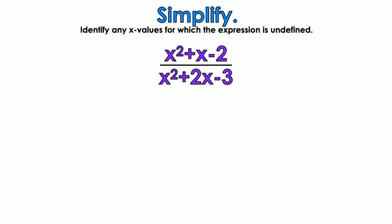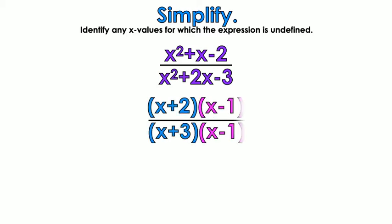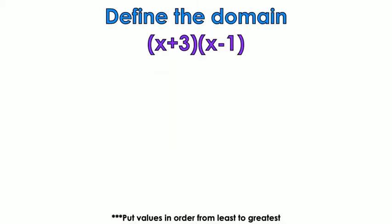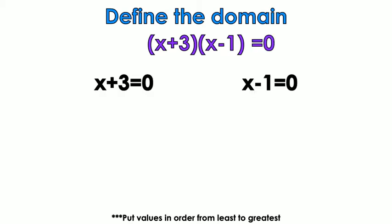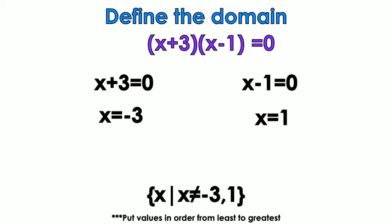Define the domain. Our denominator was x squared plus 2x minus 3, and when I factored that, I got x plus 3 times x minus 1. The denominator is what I'm concerned with when defining the domain. So I set both factors equal to 0: x plus 3 equals 0 gives x equals negative 3, and x minus 1 equals 0 gives x equals 1. So x cannot equal negative 3 and x cannot equal 1.